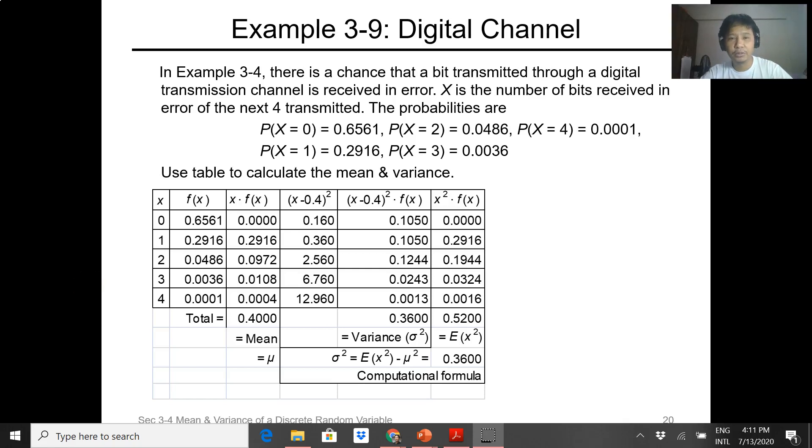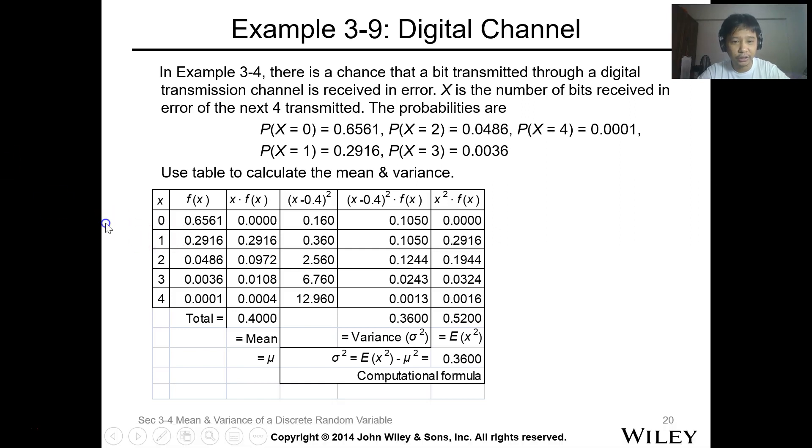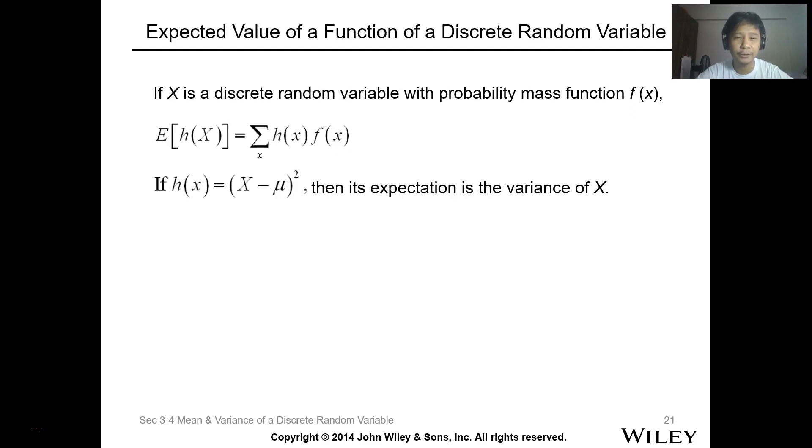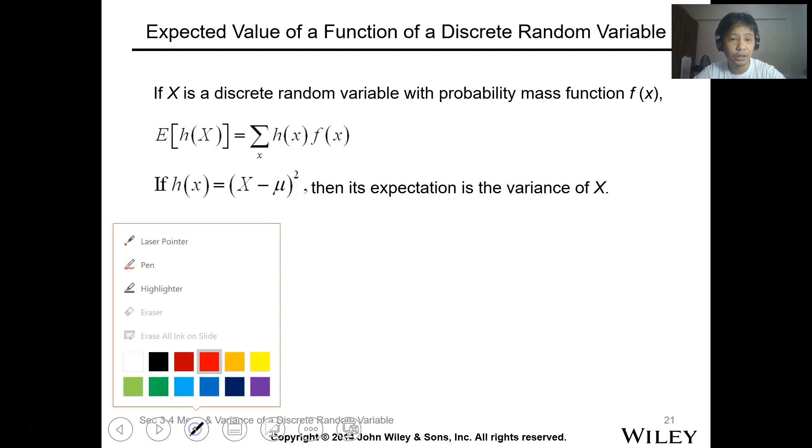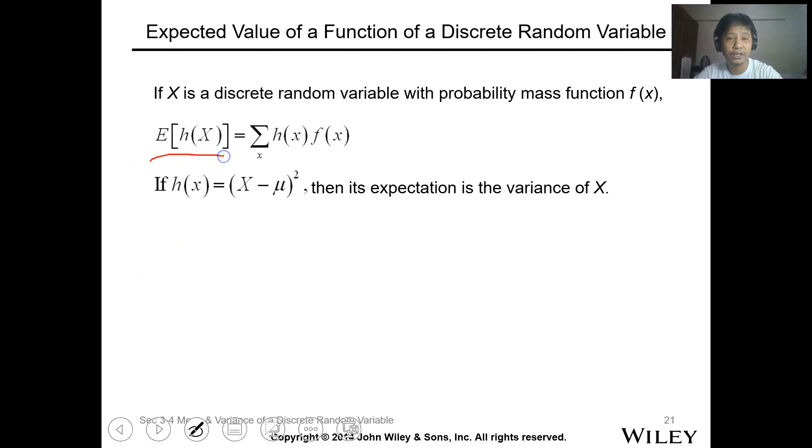So last time we solved this problem, example 3-9, for the mean and the variance. We just utilized the formula for the mean and the variance calculation. Let's proceed for the expected value. For expected value of a function of a discrete random variable, if X is a discrete random variable with probability mass function f(x), your expected value for h(x) is just summation h(x)f(x). Remember, your expected value of X is equal to the summation of xf(x).